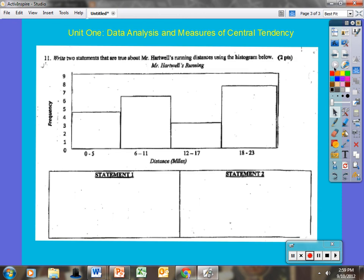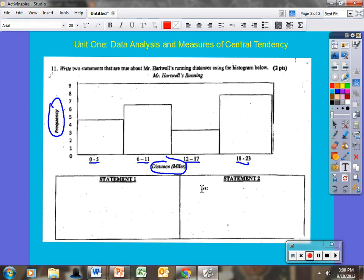One more question I want to talk about. This has to do with Mr. Hartwell's running. It says, write two statements that are true about Mr. Hartwell's running distances using the histogram below. If you're talking about science, this is just an observation, boys and girls. You are writing a true statement based on what this histogram is giving you. If I take a look, it says frequency. That means the number of times he does it. And I have miles: distance in miles. So all these have to do with miles. Zero to five miles, six to eleven, twelve to seventeen, eighteen to twenty-three. One thing I can say real quick here.